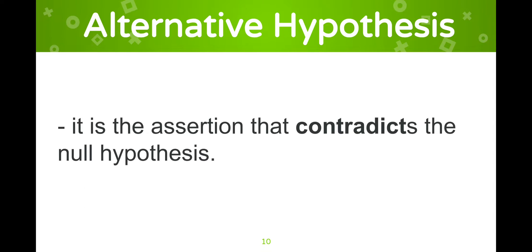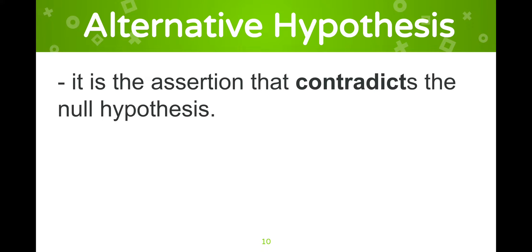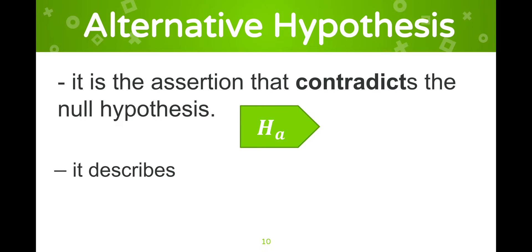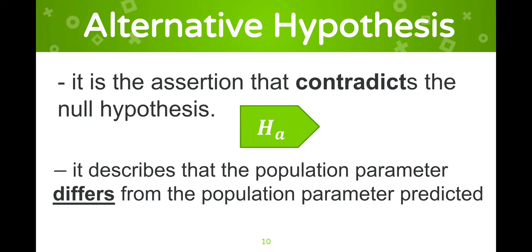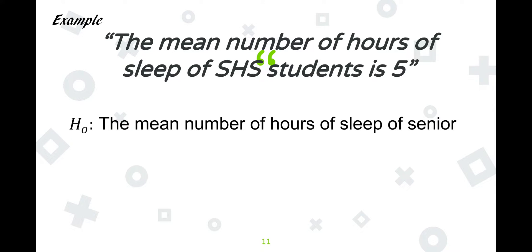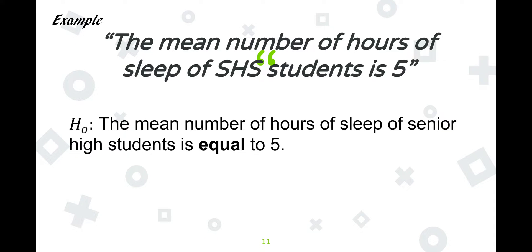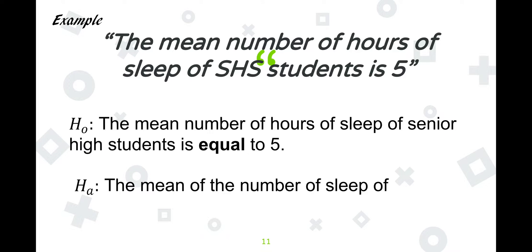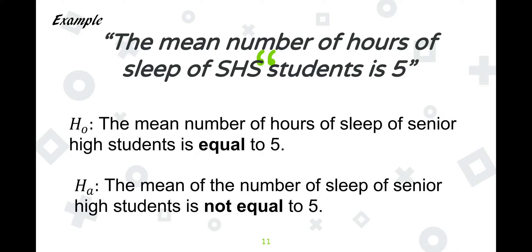The alternative hypothesis, denoted as Hₐ, is the assertion that contradicts the null hypothesis. It describes that the population parameter differs from the population parameter predicted in the null hypothesis. For example, the null hypothesis is: the mean number of hours of sleep of senior high school students is equal to 5, and the alternative hypothesis is: the mean number of hours of sleep of senior high school students is not equal to 5.